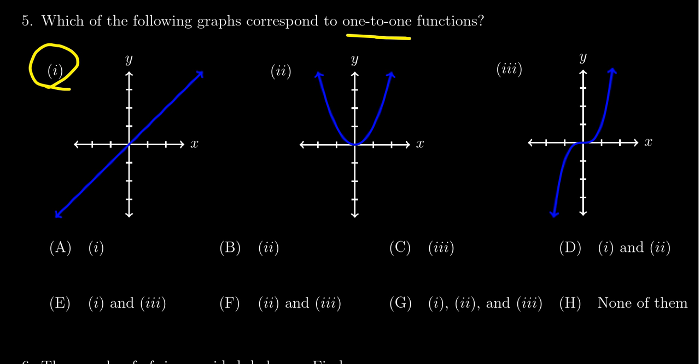Graph two, on the other hand, you see that there are horizontal lines that intersect the graph at two different places. That makes it not one-to-one. In fact, this would tell us the graph is not invertible. So we would exclude two.